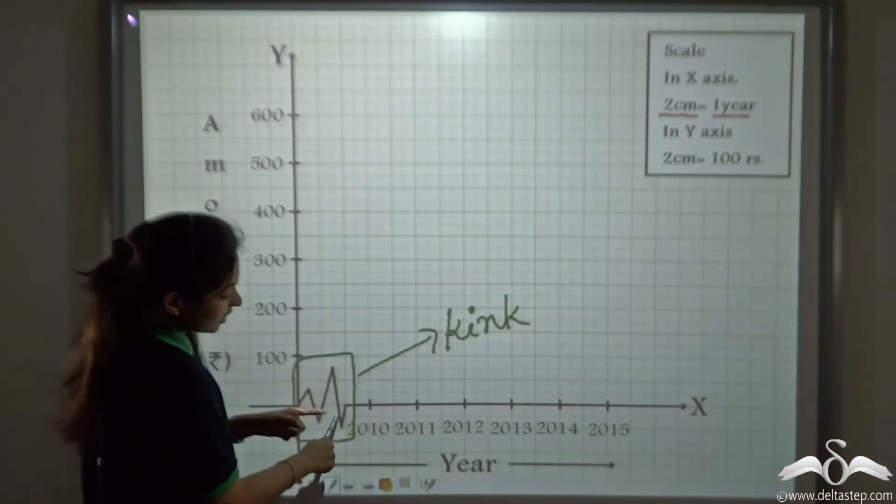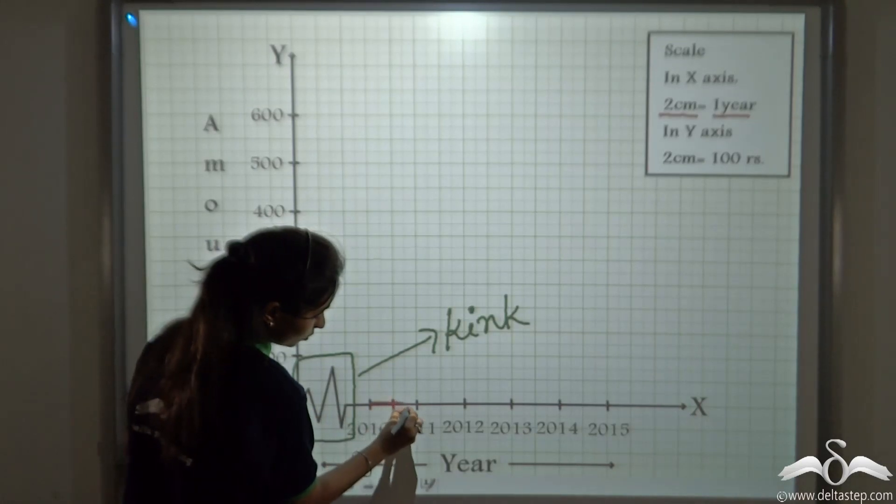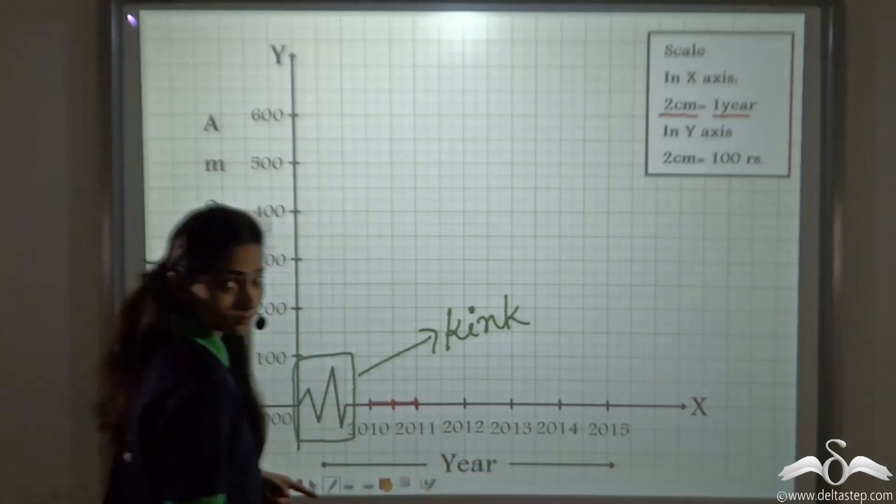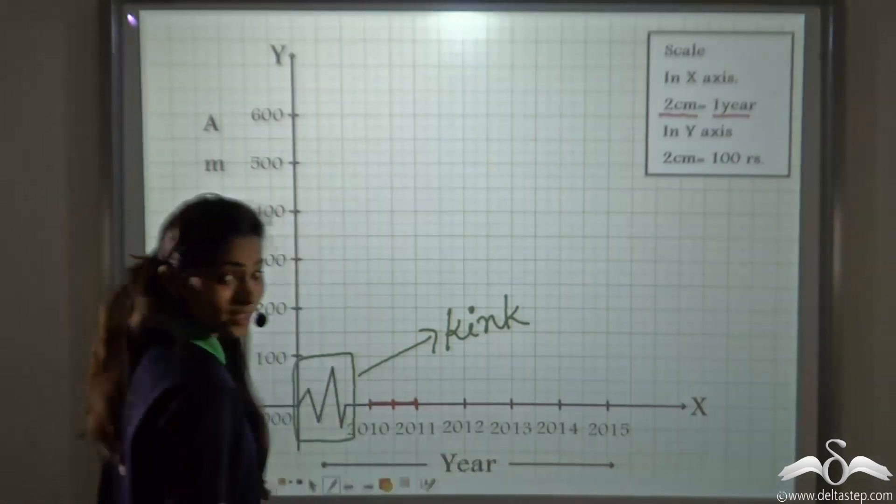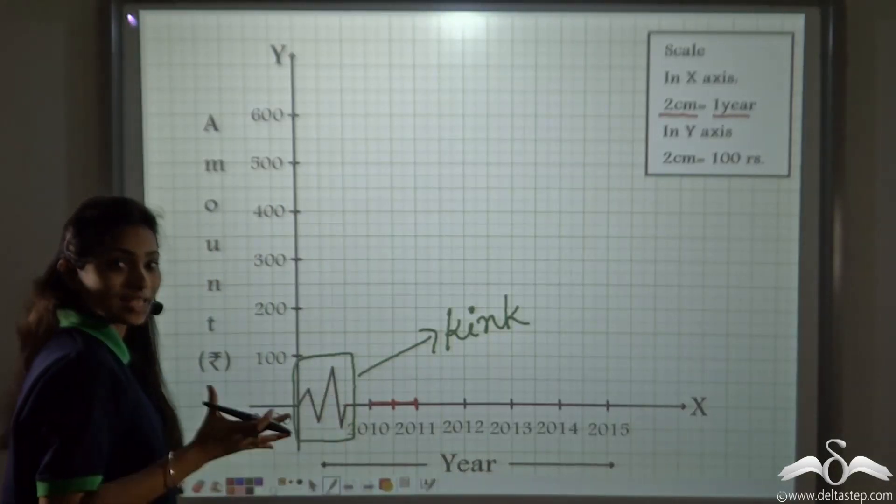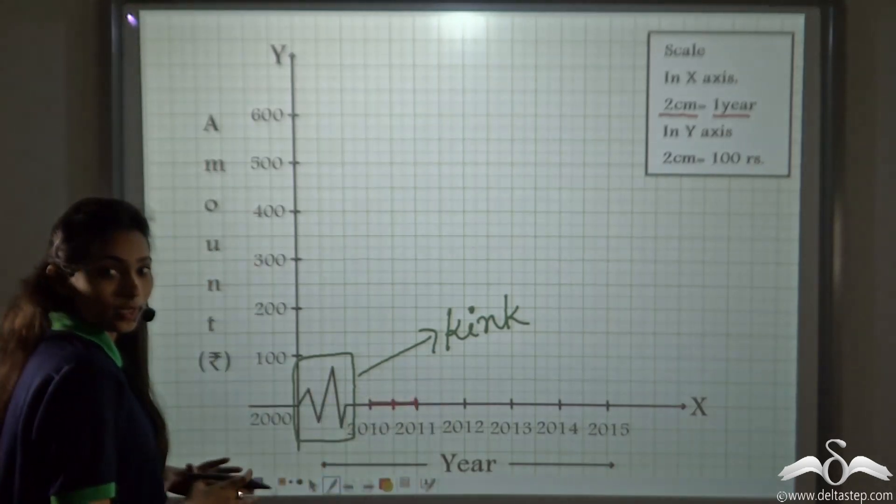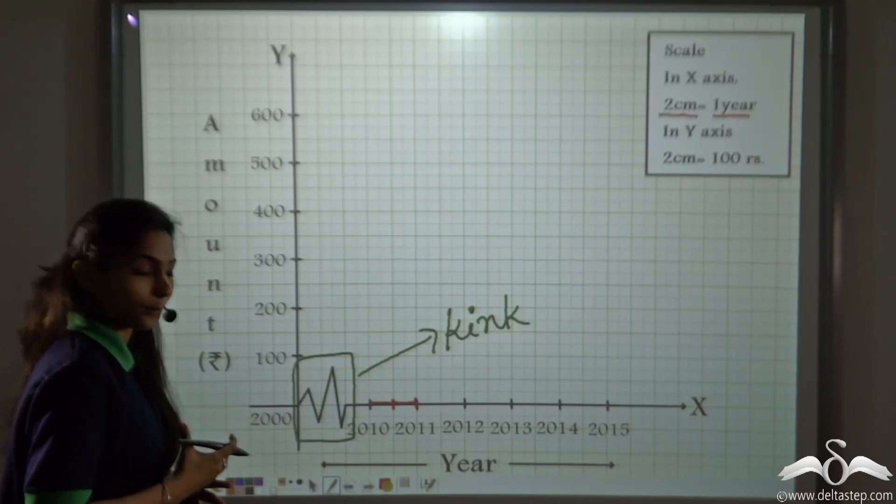After the kink, we have started it with 2010, then 1 cm, 2 cm and then 2011 and so on. So this is making our graph look neat. So using this kink will make your graph look neat as well as you don't have to make so many years in between for whose data is not given or is not mentioned in the sum.